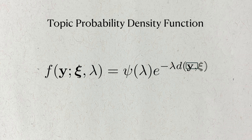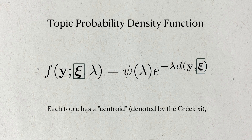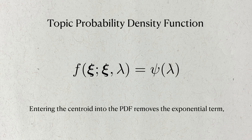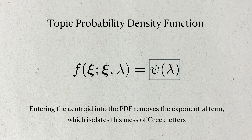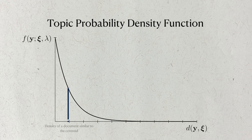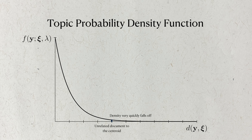This probability distribution is not based on the actual documents themselves, but on distances. A single topic has what's called a centroid, indicated by the Greek letter xi, which could be interpreted as the most representative paper of that topic. When we enter this theoretical most representative paper into the equation, the distance is zero, and we're left with a normalizing function. The purpose of this function is to make sure that the entire function integrates to 100%, which is a requirement for a PDF. If we enter a document that's similar to the centroid, the value of this PDF remains higher. If we use an unrelated document, the distance will increase, which decreases the value of the PDF by extension.